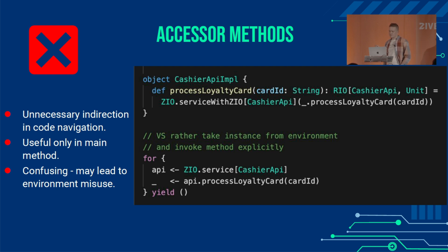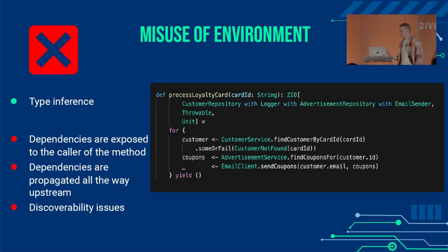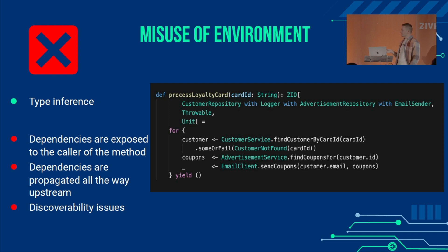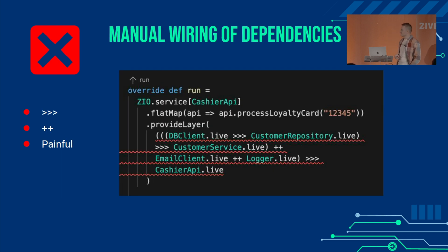Accessor methods may also be a bit confusing because they can lead to environment overuse or misuse — which brings me to the misuse of environment for dependency injection. The dependencies are exposed to the caller of the method, and this hurts discoverability. For instance, where a logger is used — we don't really know, we need to go through each line of code to find out which line introduces the logger dependency. In a complex application with lots of lines of code, this can make a mess. And manual wiring of dependencies — we've all been there, it's just painful.